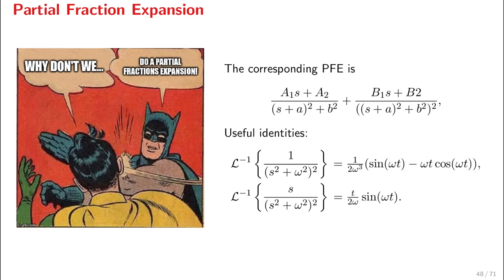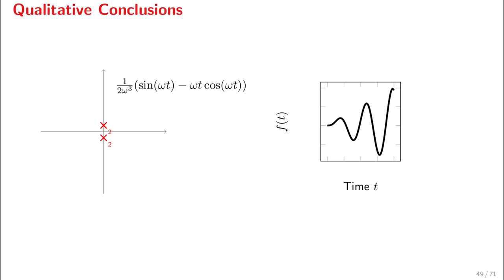But the formulas here are not so important. What I need to point out mainly are the qualitative characteristics of those inverse Laplace transforms. Let's start by examining what happens when we have purely imaginary poles of multiplicity 2. You see here we have oscillations, which is expected because we have an imaginary component.